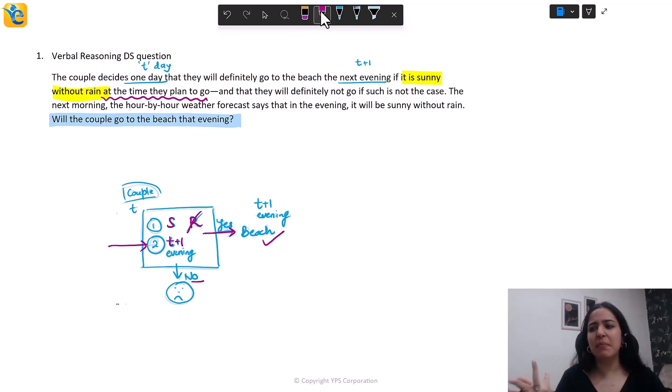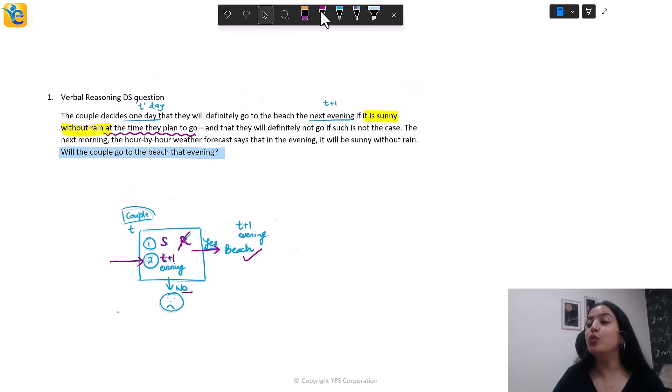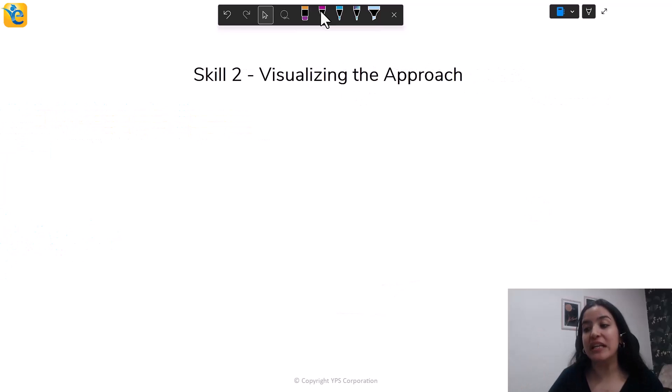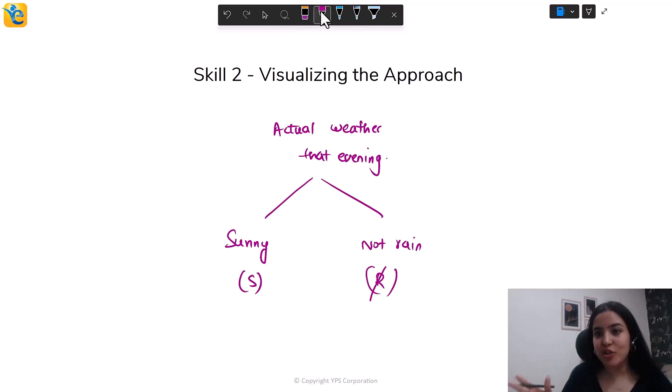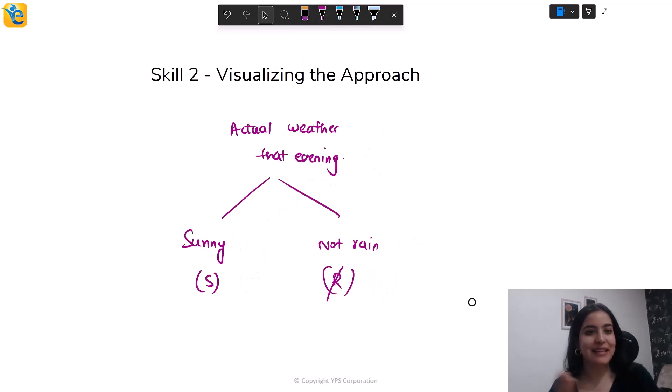Suppose that a statement helps you get to a sure yes or a sure no, then it's sufficient. But if it gives you a maybe, despite reading the statement, using the information you're getting, yeah, maybe they'll go, maybe they'll not, then the statement is insufficient. Now we need to know what. So understand that we need to know the actual weather tomorrow evening, that evening that they want to go and that too on two accounts. So this clarity I'm getting because I've owned the data set. So we need to know actual weather that evening, which evening, the evening that they want to go to the beach. And this also we have to know on two accounts. One, that it is sunny and two, that it is not raining. So two accounts as in sunny and rainy. So this is what you do not want to happen. The rain should not happen while the sun should be there. It should be sunny. And that's it. You see, if we own the data set, we can visualize the framework to assess the statements.